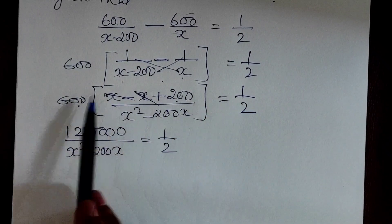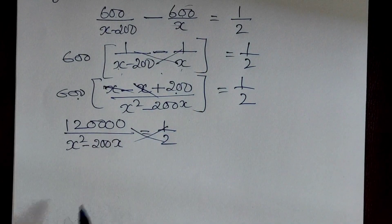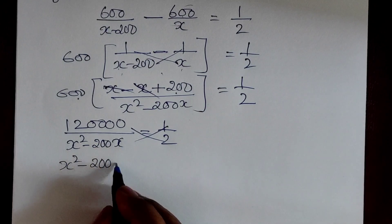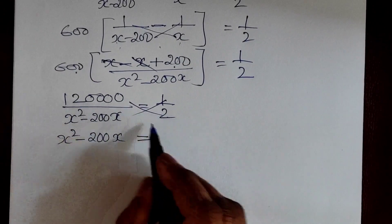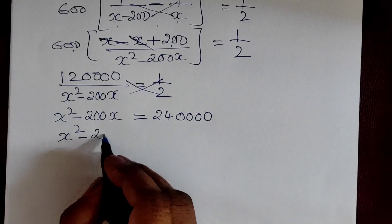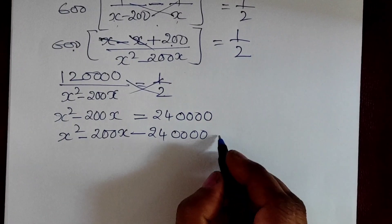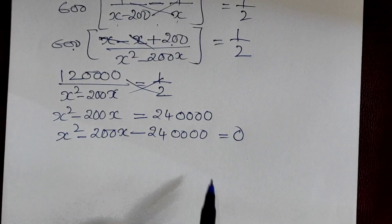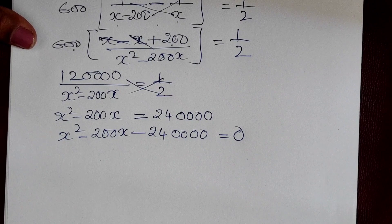Simplifying, we get x squared minus 200x equals 240,000. So, x squared minus 200x minus 240,000 equals 0. This is a quadratic equation. The product is 240,000 and the sum is minus 200.